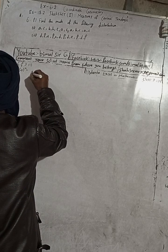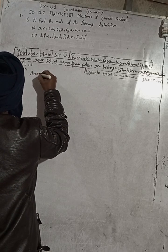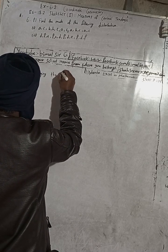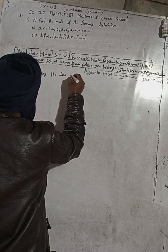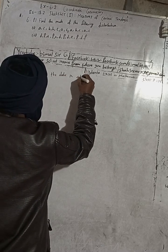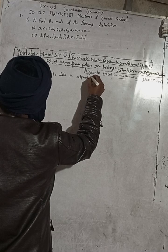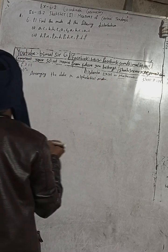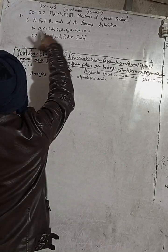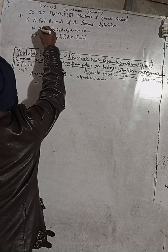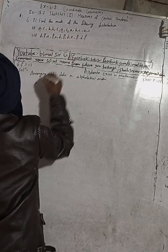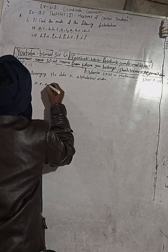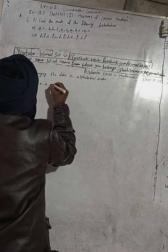We will arrange the data in alphabetical order. Alphabetical order means first I will choose A. Counting all the A's: one, two, three, four — there are 4 A's.